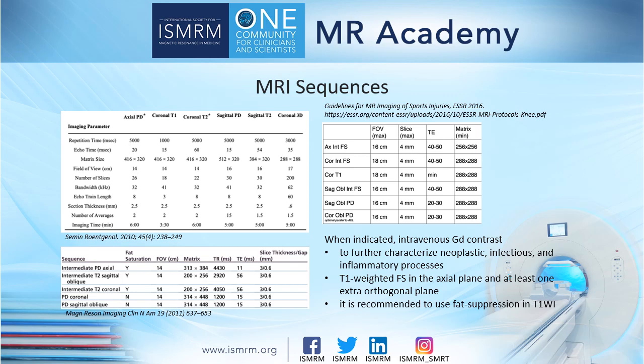These are examples of standard protocols for knee MR imaging. Sequences typically include axial, coronal, and sagittal intermediate-weighted proton density-weighted or T2-weighted images with or without fat suppression. When indicated, intravenous gadolinium contrast can be used to further characterize neoplastic, infectious, and inflammatory processes. T1-weighted fat-suppressed sequences in the axial plane and at least one additional orthogonal plane are acquired after intravenous gadolinium contrast enhancement. For more precise evaluation of contrast enhancement, it is recommended to use fat suppression in T1-weighted images.